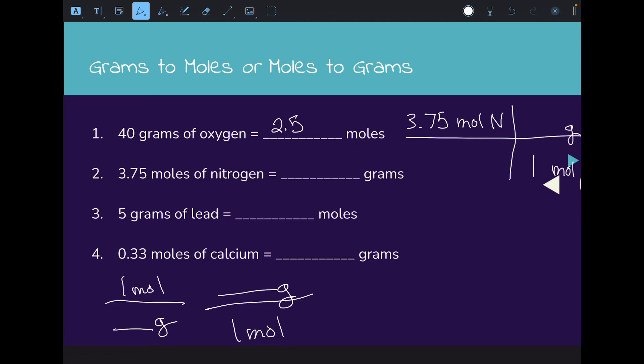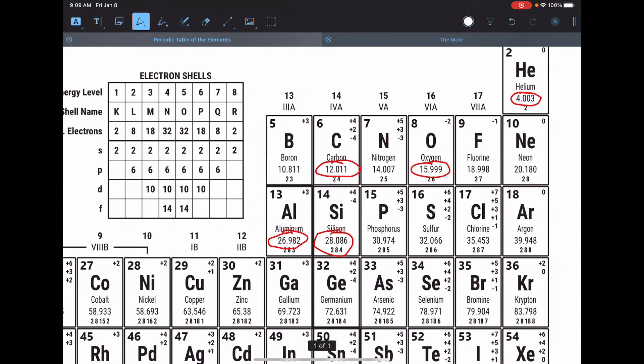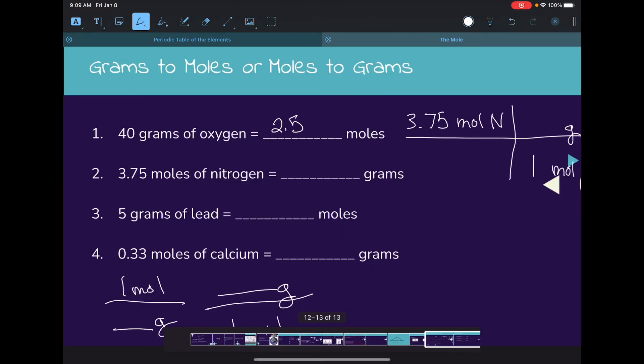It's always one mole for however many grams. Looking at the periodic table, nitrogen is 14.007. We'll put that in, multiply across the top and divide across the bottom to get our answer. The answer here is about 52.7 grams.